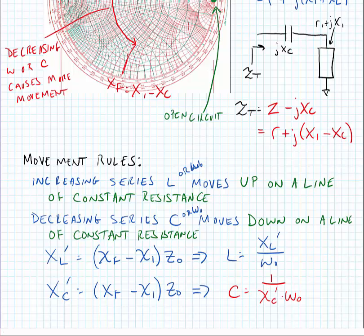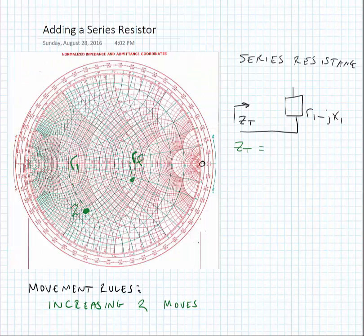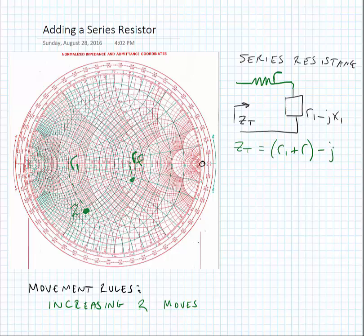Now let's look at what happens if we add a series resistor. We add a series resistor with a normalized value of little r. Looking at the impedance, we see that it is now equal to R1 plus r minus JX1. This makes sense — when we add a series resistance with no reactance, we only change the resistive part of the network. If we plot what happens on the chart, we move towards the open circuit line on a line of constant reactance.